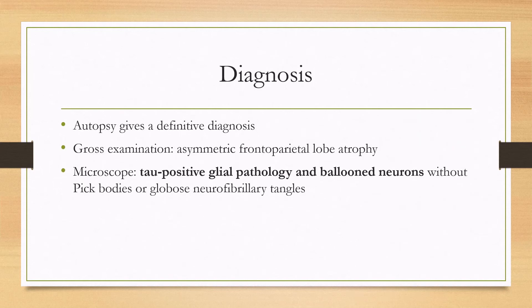For diagnosis, autopsy gives a definitive diagnosis. On gross examination, there will be asymmetric frontoparietal lobe atrophy. Under the microscope, you can see tau-positive glial pathology and ballooned neurons, but you won't see Pick bodies or globose neurofibrillary tangles. Remember, this is not the only tauopathy, so you still have to differentiate it from other tauopathies.